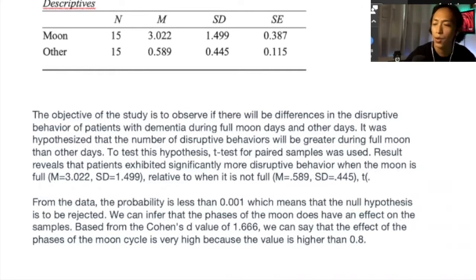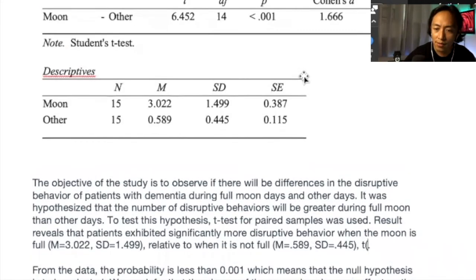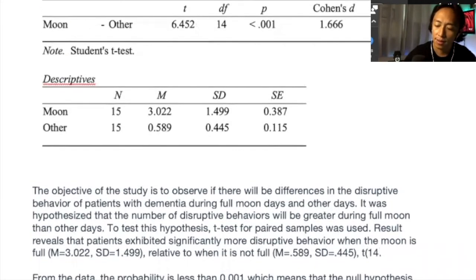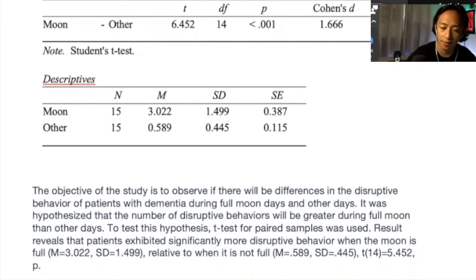We said that that's significant. But what is our evidence? We have to state the result of our t-test. And how do we report our t-test? We say t. How do we express that? T, parenthesis, degrees of freedom. What is the degrees of freedom? 14 equals, what is the value of the t? 6.452, comma, p. What is our p-value? P-value is 0.001. And that is how you write the result. So by stating this, this is your evidence for the fact that you said that there is a significant difference. Or that the disruptive behavior is significantly more during full moon.